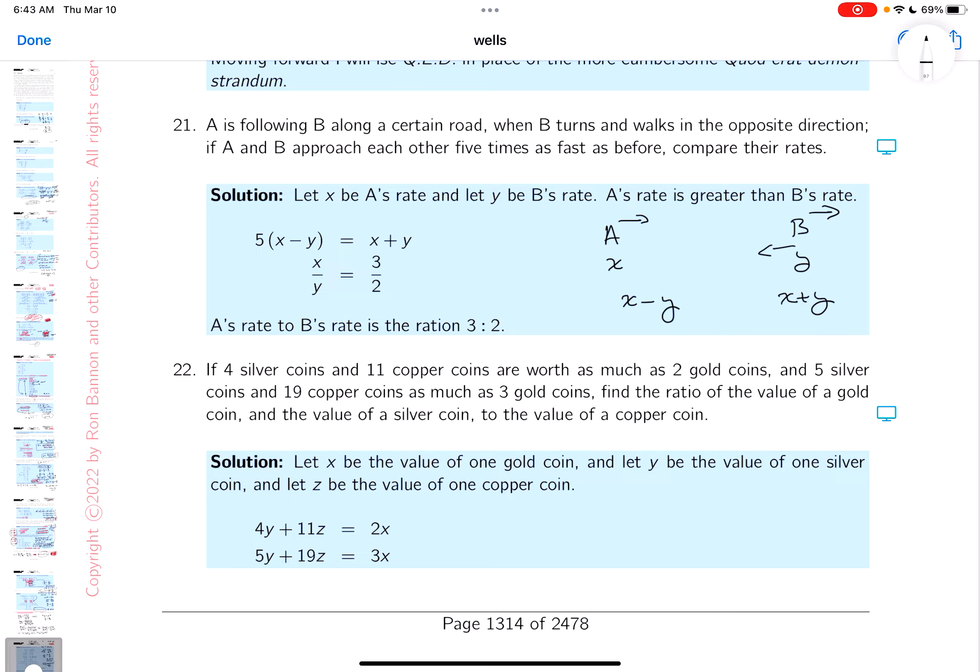But what they go on to say is that the rate now is five times as great as before, which means I have to move five times this guy over here. It's five times faster. So I've got to simplify this. What do you get? You get 5X minus 5Y. This is X plus Y. And what would you get? You would get 4X equals 6Y.